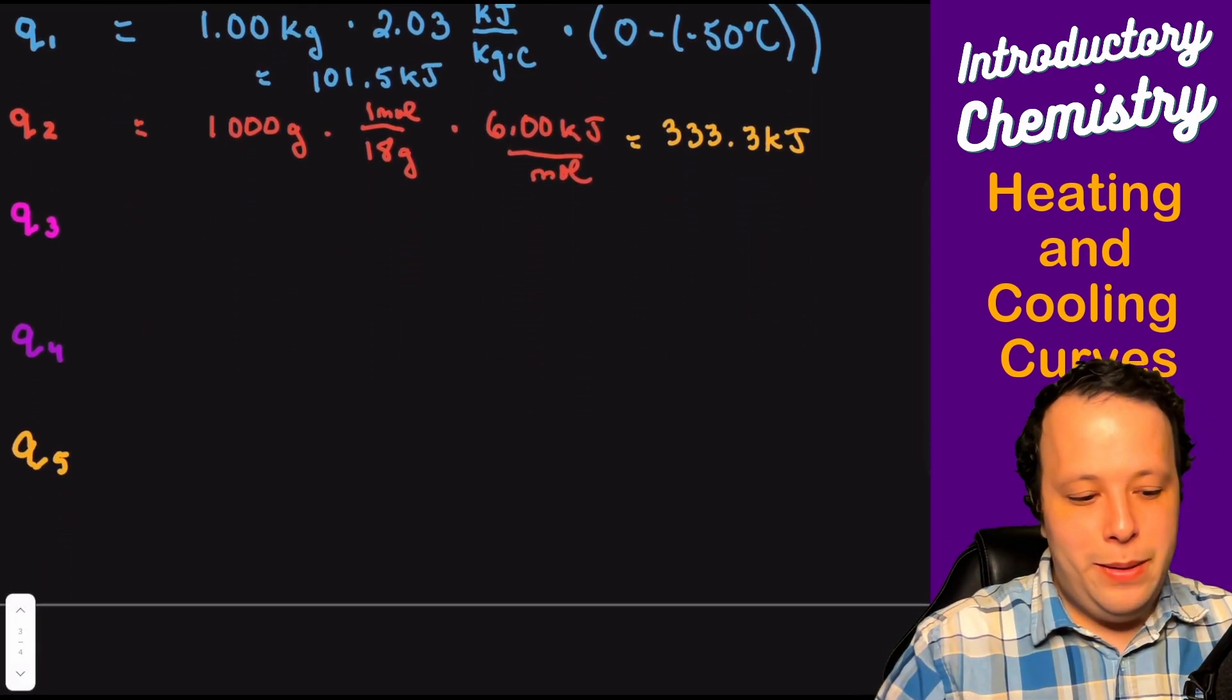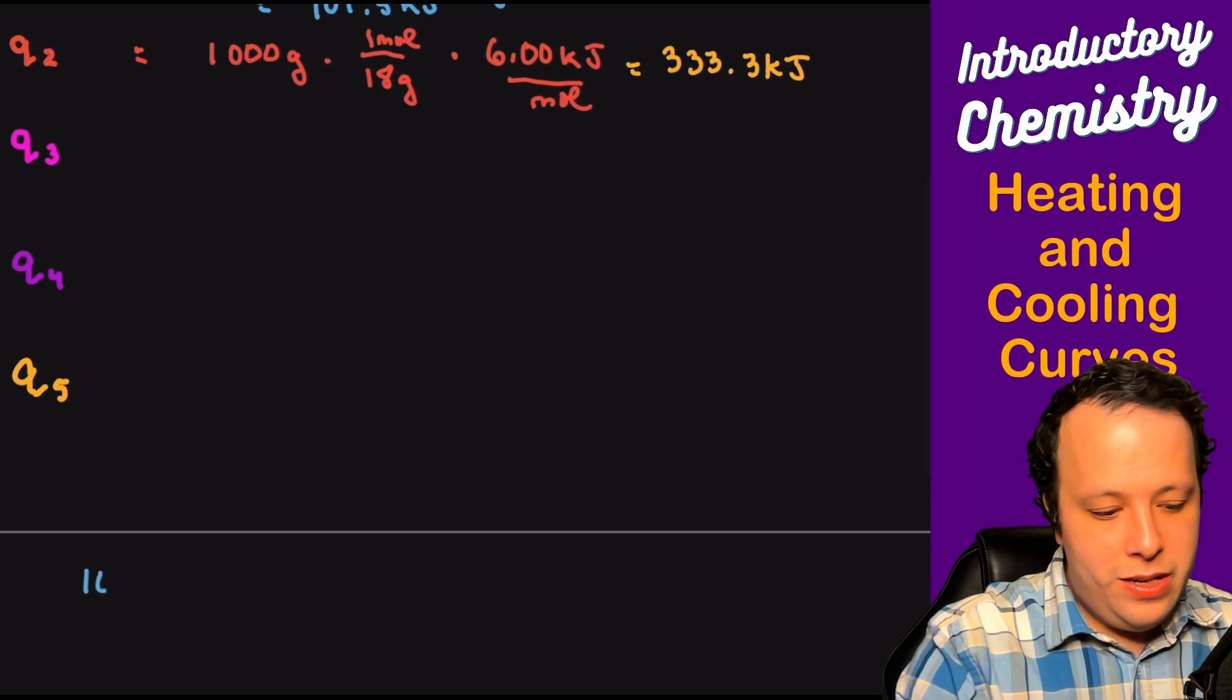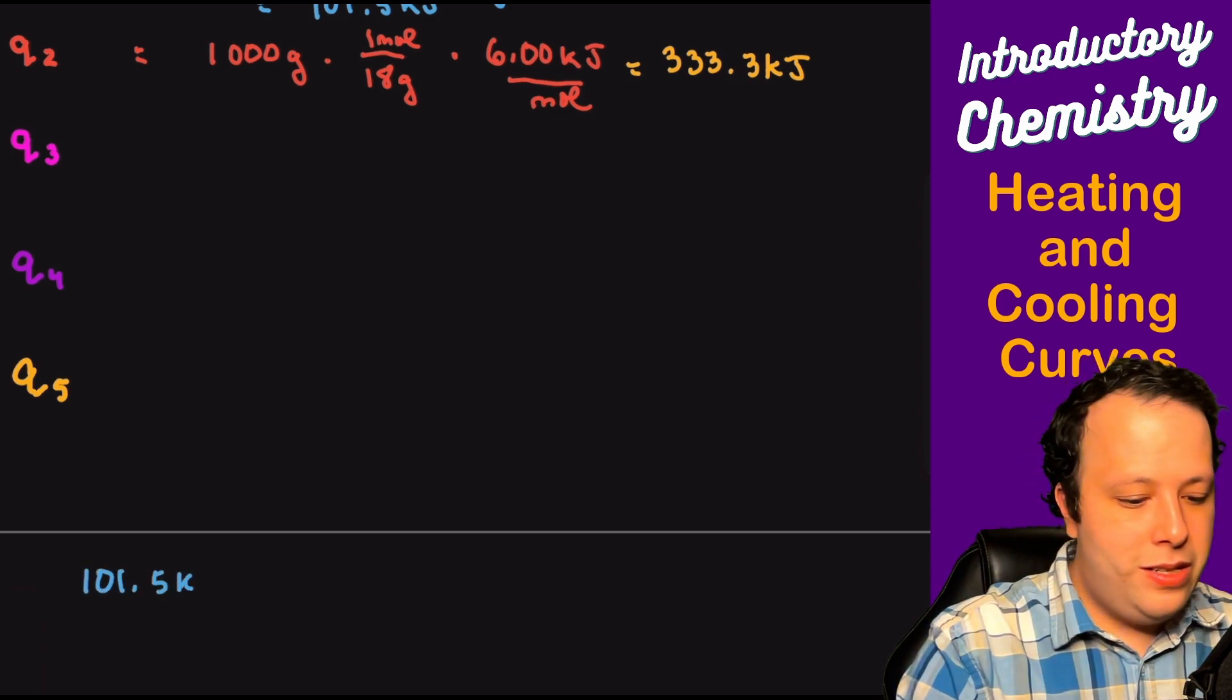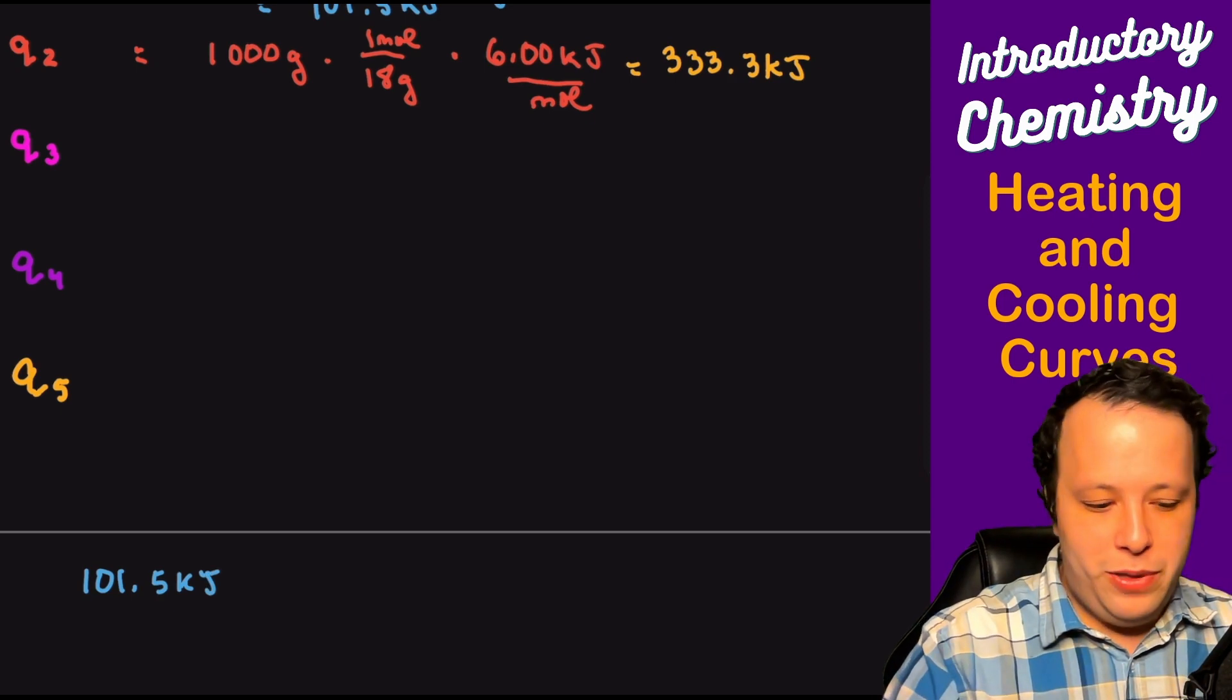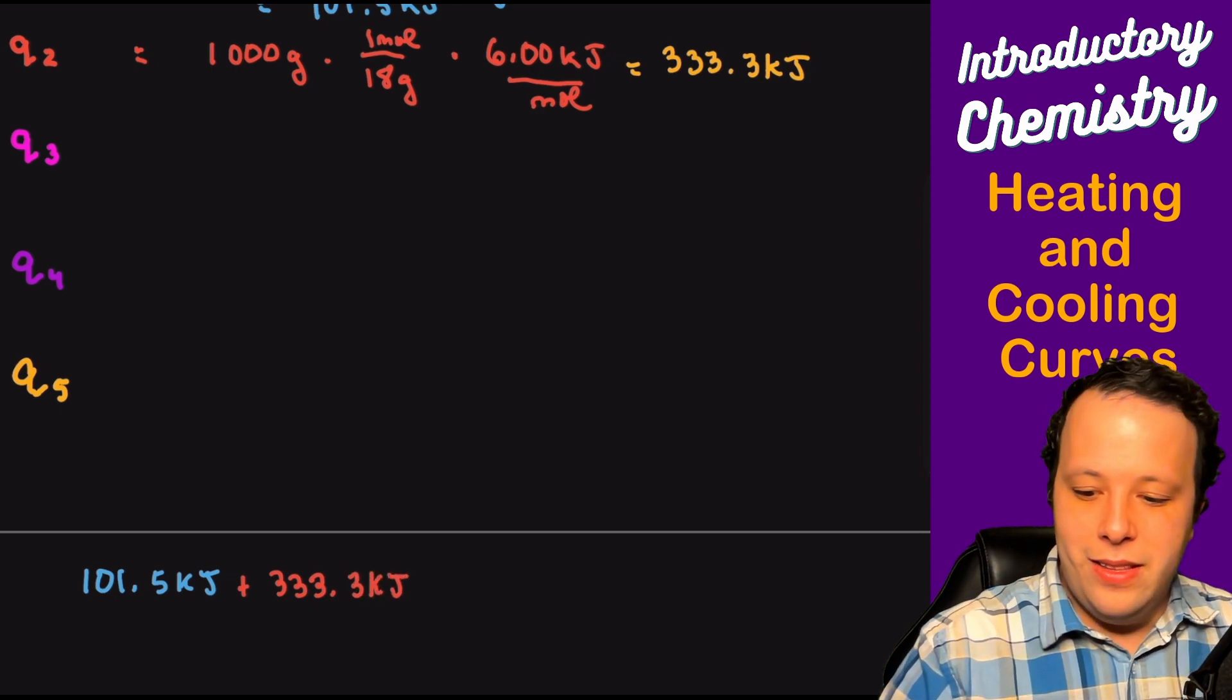That's a lot of energy for Q2. Notice how much more energy it took to do a phase change instead of just heating ice up. There is a big difference trying to get over that hump and for it to finally become what it needs to do. So let's keep track of all this for ourselves. We're going to have 101.5 kilojoules and we're going to add that plus 333.3 kilojoules.